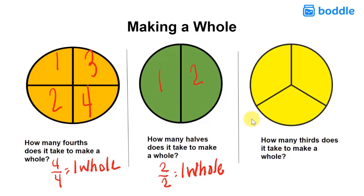Over here, how many thirds does it take to make a whole? Again, we're just looking at one whole circle divided into three equal parts, and it takes one, two, three of those thirds pieces to give us one whole. So three thirds is equal to one whole.